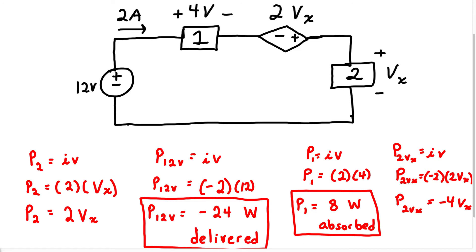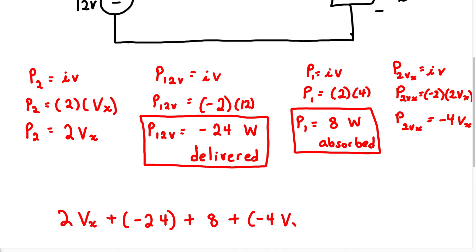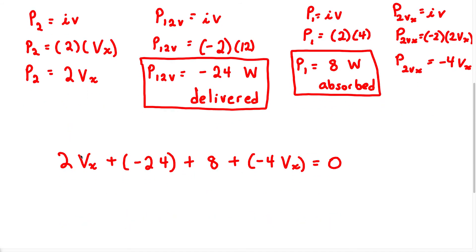Let's use Tellegen's theorem to calculate Vx, because we know Tellegen's theorem must hold true: the power absorbed equals the power delivered, meaning all powers sum to zero. We have our first power: 2Vx, plus negative 24, plus 8, plus negative 4Vx, and all of that should equal 0. Simplifying: 2Vx minus 24 plus 8 minus 4Vx equals 0.